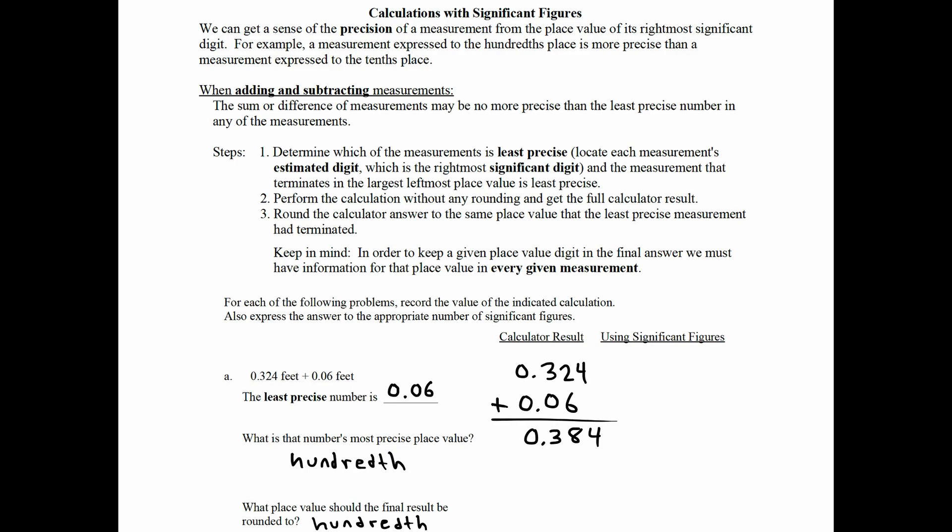But it is not the correct answer according to sig figs. The answer of .384 would actually be too precise. The idea is that we don't really know what digit goes here. Whoever did the measurement didn't have a precise enough ruler in order to make any determination on what that digit's value is. For that reason, it could really be anything. And so we don't want to say at the end that we're confident in the 4 here when we're really not. So what we want to do is we actually want to use that 4 to round the hundredths place value. And so the final answer according to sig figs would be .38 feet.